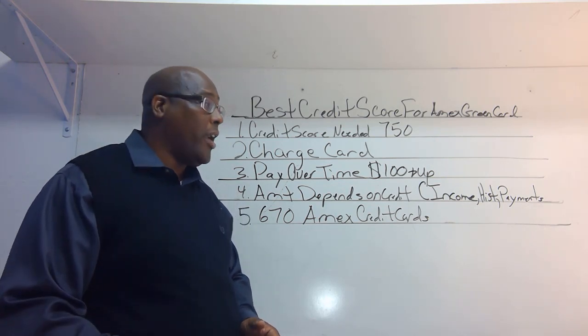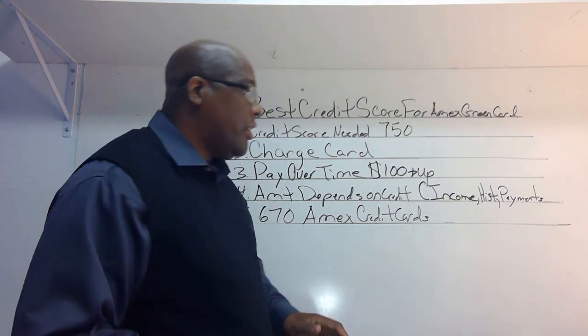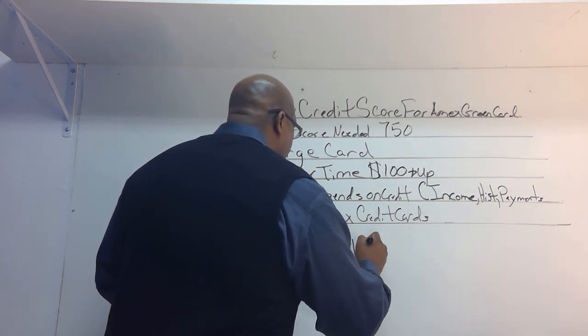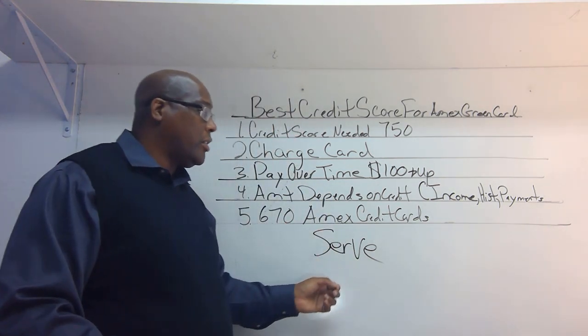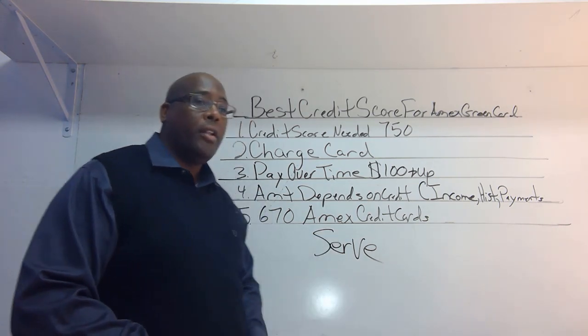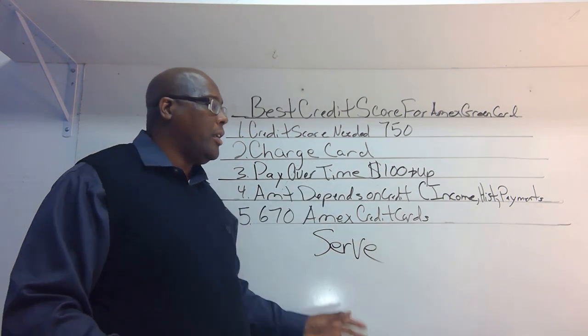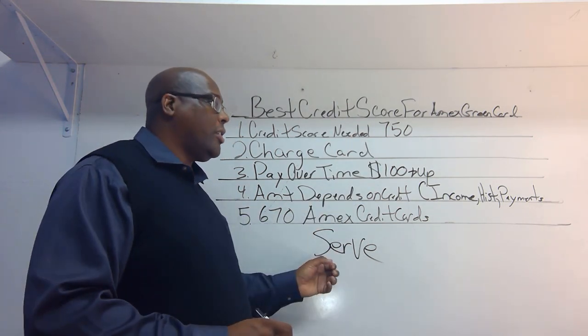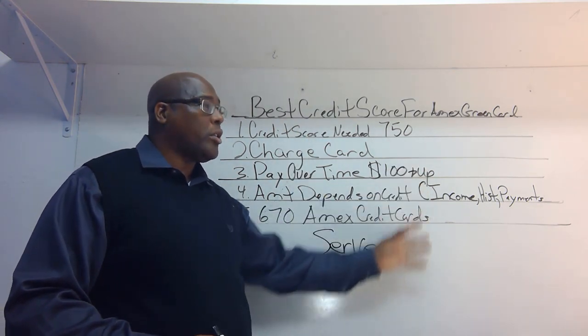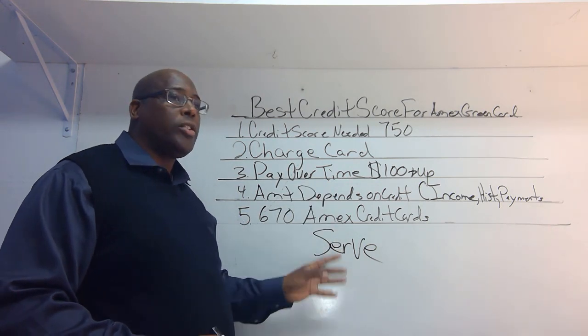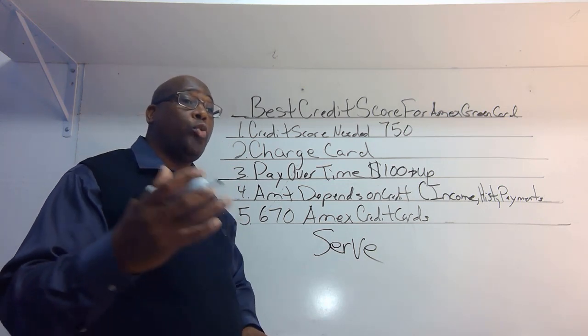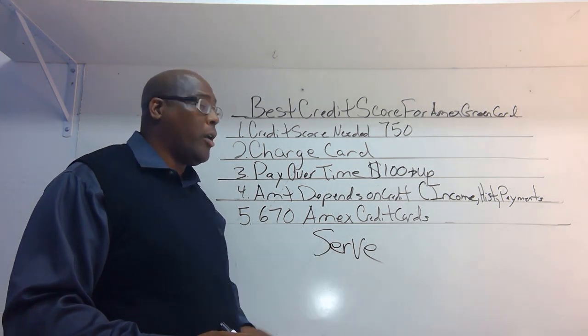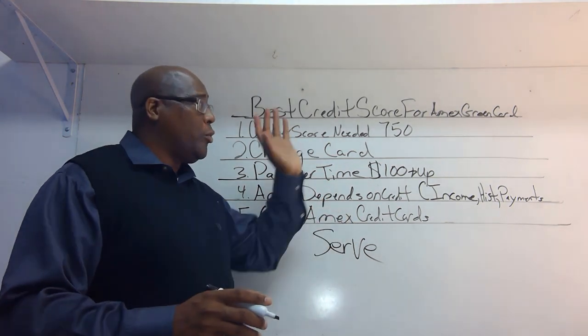And like I said in previous videos, the best way to get an American Express credit card, especially when you have challenging credit, is to build a relationship. And the way to build that relationship is through their Serve card. Now the Serve card is their prepaid debit card that you put money on and use it. However, your transactions and everything, all of that data is being reported back to American Express. And the longer you use that card, the more of an opportunity you have to start to get a credit card with American Express, because they actually see what type of transactions that you're utilizing their Serve card for. So this is the reason that I tell people, if you have challenging credit but you want to build a relationship with American Express, then you should seek out their Serve card, the Serve debit card.